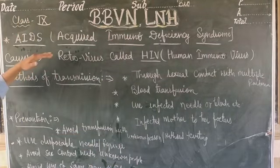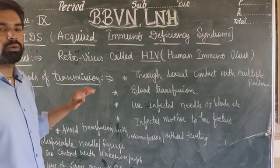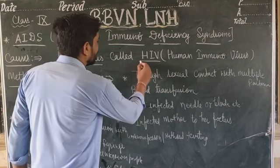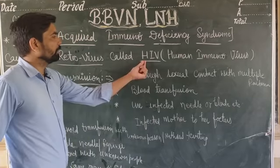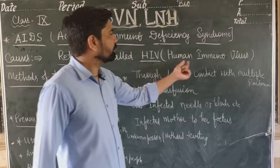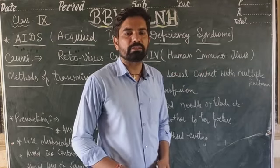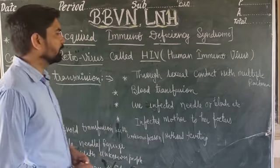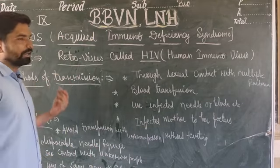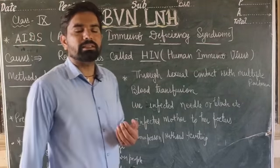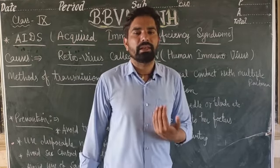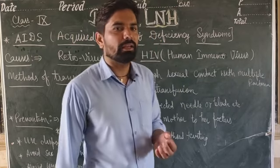AIDS किसकी वज़ह से होता है? यह एक retro virus की वज़ह से होता है। इसके बाद methods of transmission — कि इसका transmission कैसे होता है, from infected person to a healthy person, यह कैसे transmit होता है।